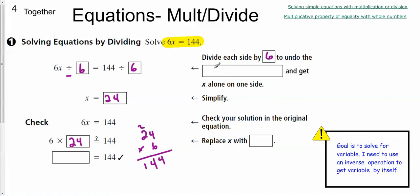So we divided each side by 6 to undo the multiplication. And we simplified. So then we go back and check. We replace x with 24. So I solved it here. We reworked it here. And that's what I came up with. So 144 equals 144. Check.